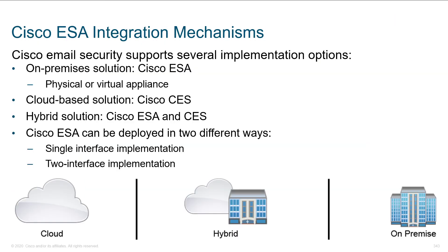There are a couple of Cisco ESA integration mechanisms. Some customers prefer on-premise solutions for hardware control and physical security. There are also cloud-based solutions — CES is the cloud-based option, ESA is the on-premise option — and there's a hybrid solution for complex environments that need both. When deploying, there are two interface and single interface options, which we'll cover in a couple of slides.